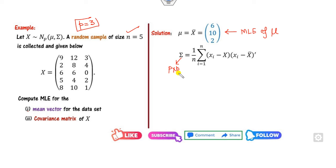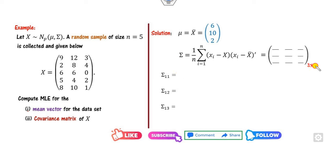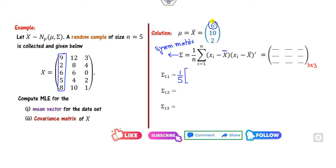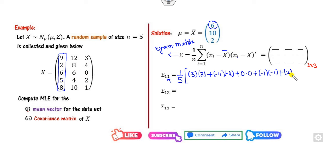Continuing the computation of x̄: second component = (12+8+6+4+10)/5 = 40/5 = 10; third component = (3+4+0+2+1)/5 = 10/5 = 2. So the MLE of μ is x̄ = [6, 10, 2]ᵀ. The MLE of Σ is a symmetric 3×3 matrix (p×p), so we need to find 9 elements.